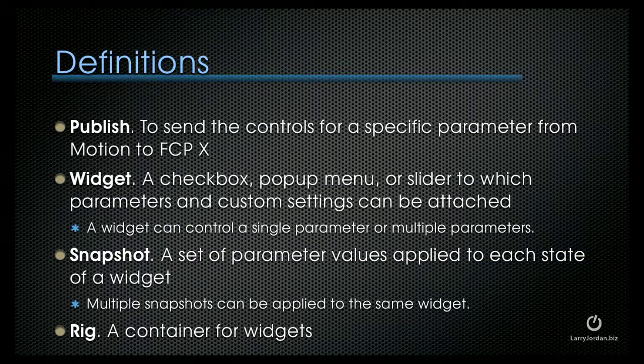The definition of publish means to send the controls for a specific parameter from Motion to Final Cut Pro 10 — this sends the entire contents of the control. A widget, on the other hand, has three different states: a checkbox, a pop-up menu, or a slider, to which parameters and custom settings can be attached. A widget can control a single parameter or multiple parameters. A snapshot is a set of parameter values that are applied to each state of a widget — the widget is the control, and the snapshot is the settings that go into the control.